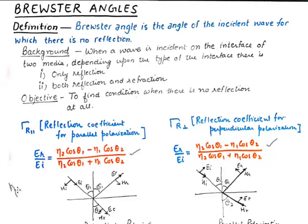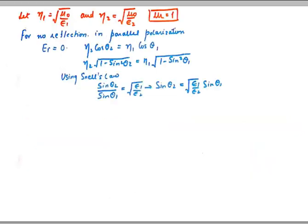Here eta is sqrt(mu / epsilon), so this value is dependent upon the permeability and permittivity of the material. The wave is traveling from medium one to medium two, where mu_1 and epsilon_1 are the parameters for medium one and mu_2 and epsilon_2 are the parameters for medium two. For the sake of simplicity we take mu_r for both mediums to be one, so that gives us mu for both mediums equivalent to mu_naught. Of course epsilon_1 and epsilon_2 will be different for both mediums.